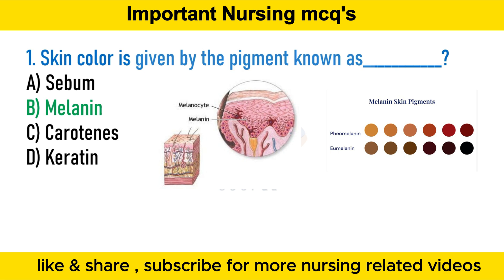Melanin is present in human and animal skin to varying degrees and is responsible for the unique eye, hair, and skin color. It provides pigmentation to the skin, eyes, and hair. The substance also absorbs harmful ultraviolet rays and protects the cells from sun damage. Melanin is produced in melanocytes. There are three different types of melanin: eumelanin, pheomelanin, and neuromelanin.